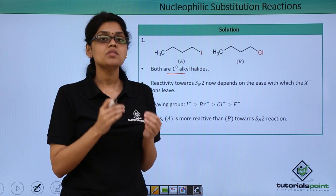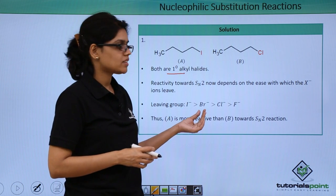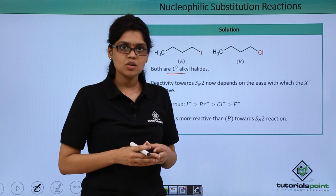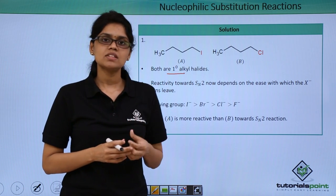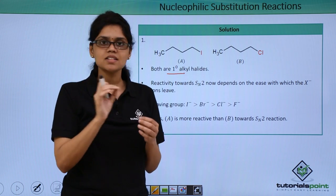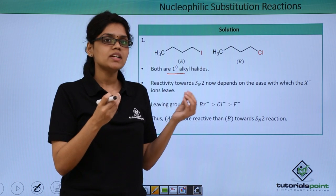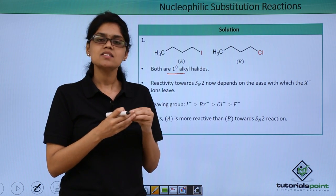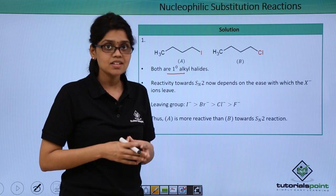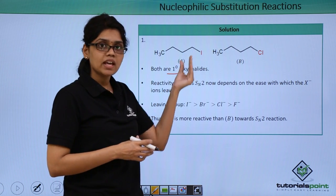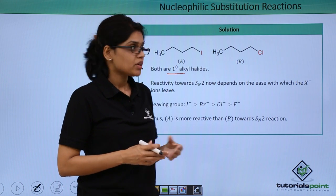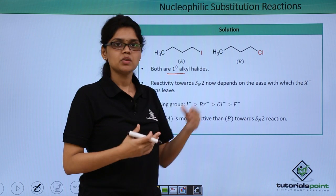The order of leaving group ability is: I⁻ > Br⁻ > Cl⁻ > F⁻. This order makes sense because the C–I bond strength is very weak due to the large difference in atomic size between carbon and iodine, making it very easy for an incoming nucleophile to attack so that I⁻ leaves. Based on this order, compound A will be much more reactive towards SN2 reaction compared to compound B, because iodine is a much better leaving group than chlorine.